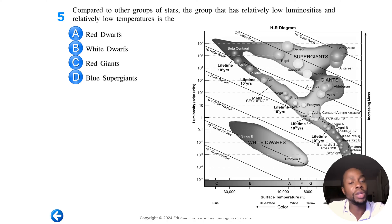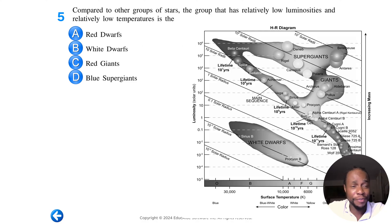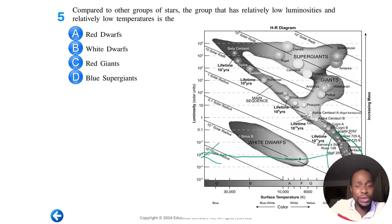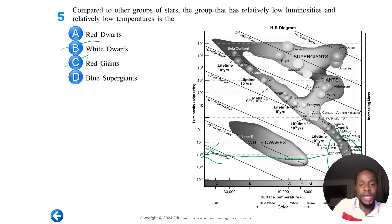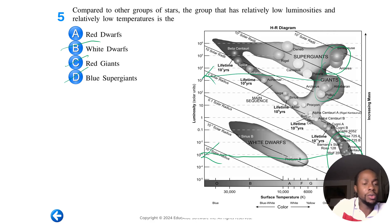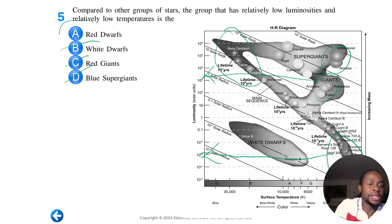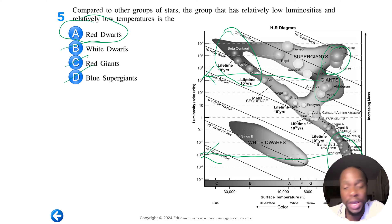Last question: Compared to other groups of stars, the group that has relatively low luminosities and relatively low temperatures is the red dwarf. Red dwarfs have the lowest luminosity — they sit right at the bottom — and their temperatures are also very low. White dwarfs are out, red giants are out because they are very luminous, and blue supergiants are way too hot. So the answer is red dwarf. That's how you use Earth Science reference table page four.